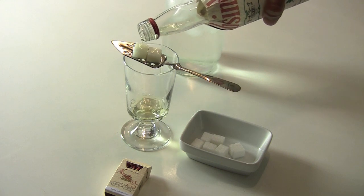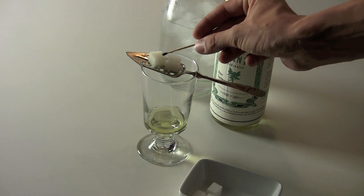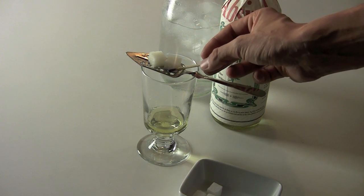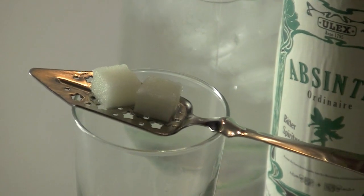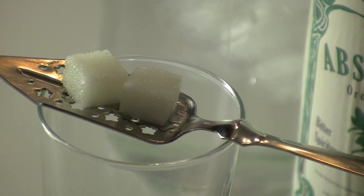You should be able to see the sugar cubes absorb the absinthe as they get a nice light green tint of color from the spirit. The absinthe has a high alcohol concentration so it burns rather well. We will now ignite the sugar cubes.